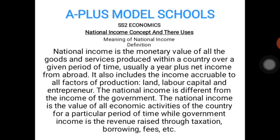All these goods and services produced are valued in monetary terms — that is what national income actually talks about. For instance, if all the goods and services produced in Nigeria for a given year are worth 1 billion naira, then that monetary value represents the national income for that year.